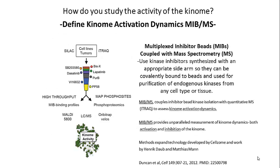To study the activity of the kinome and its activation state, we use multiplexed inhibitor beads, which are custom synthesized. We place an appropriate sidearm in the kinase inhibitor so that we can immobilize it to a Sepharose bead without influencing the ability of the inhibitor to bind to the active site of the specific kinase. Multiplexed inhibitor beads coupled with quantitative mass spectrometry have allowed us to assess kinome activation dynamics, providing an unparalleled measurement of kinome dynamics — both activation and inhibition. These methods were first developed by Cellzone and also by Henrik Daub and Matthias Mann to look at on-target and off-target behavior of kinase inhibitors. We've extended these methods to study the behavior of the kinome in intact cells, animals, tumors, and virtually any tissue type.